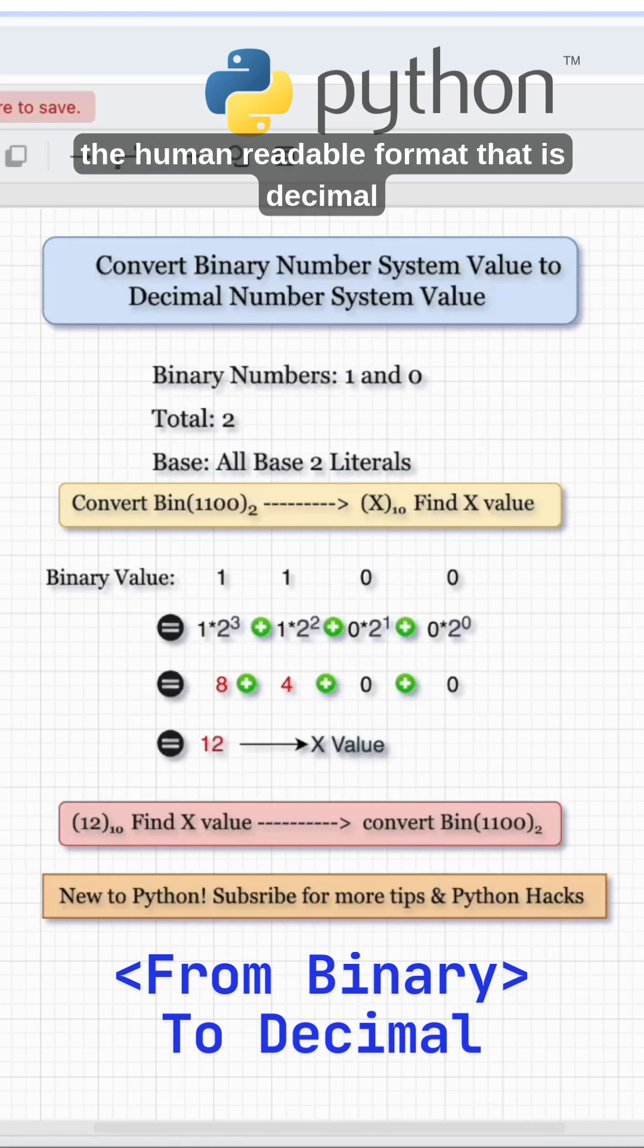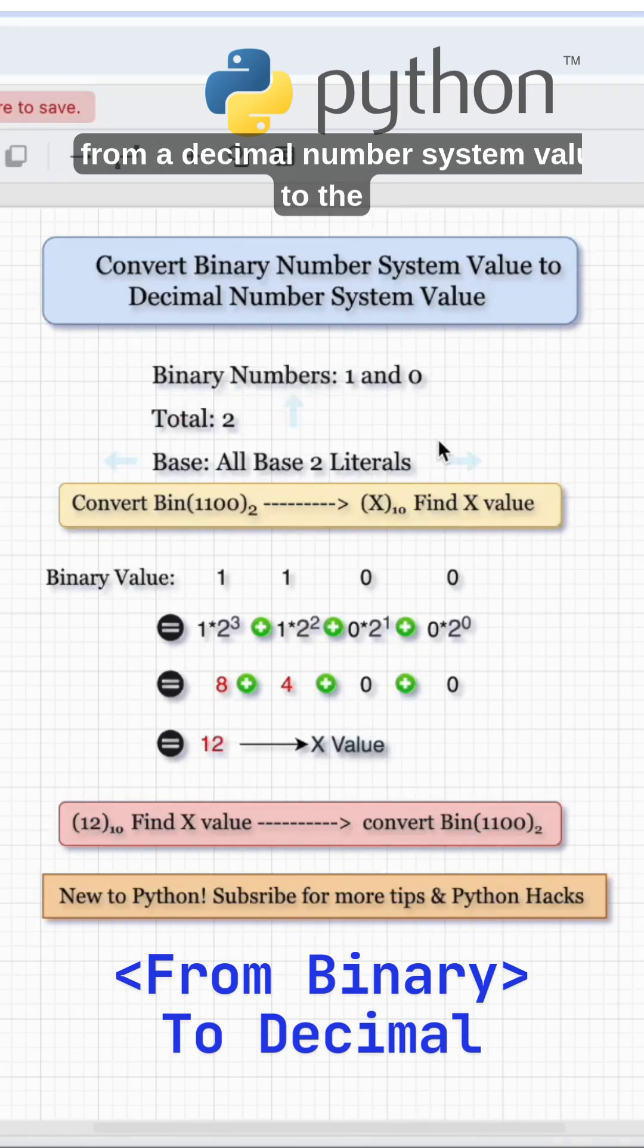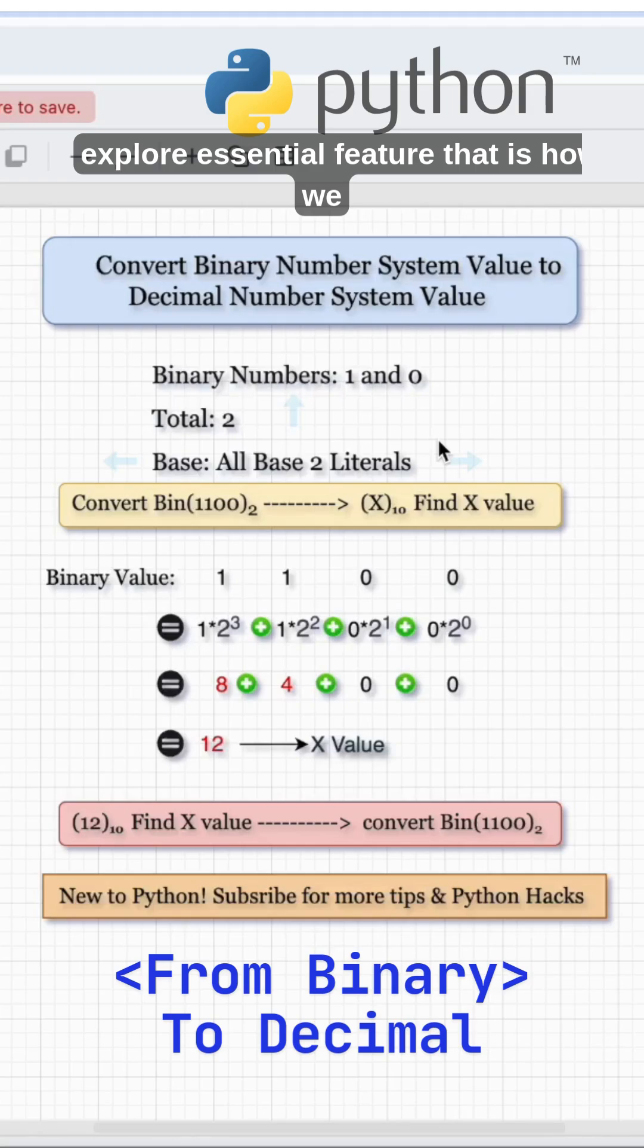We are all using the human readable format, the decimal number system which is 0 to 9, that is base 10. Previously we have seen how to convert from a decimal number system value to binary. Now we will explore an essential feature: how we can convert binary number system values to decimal number system values.